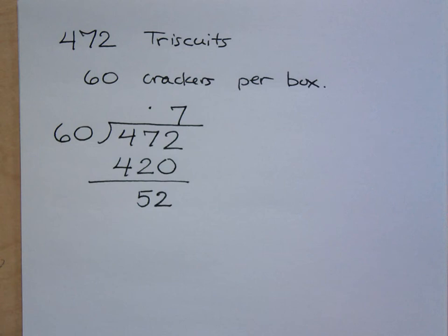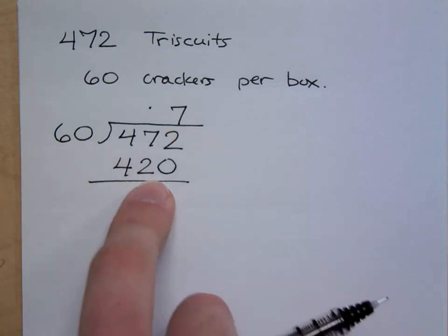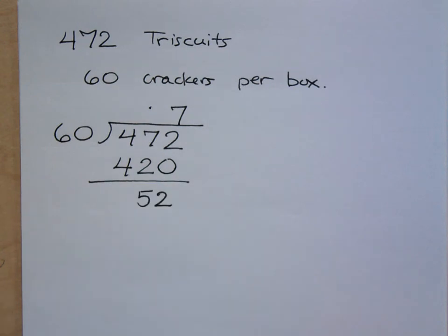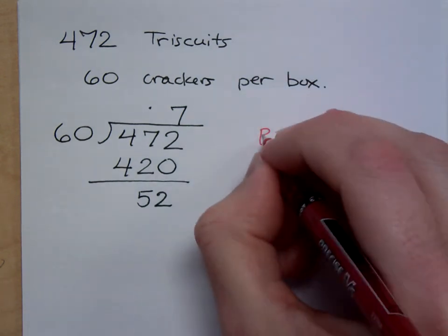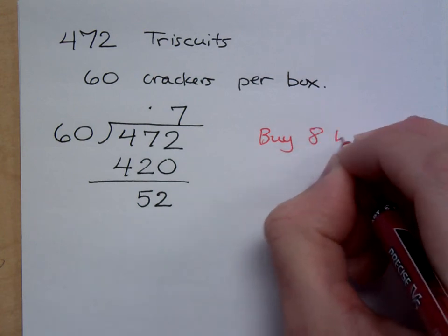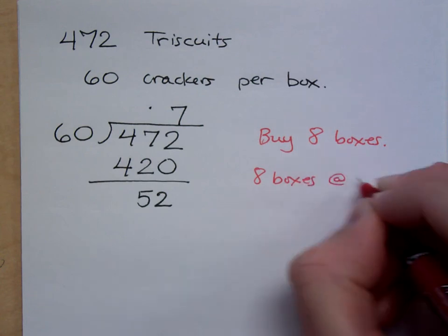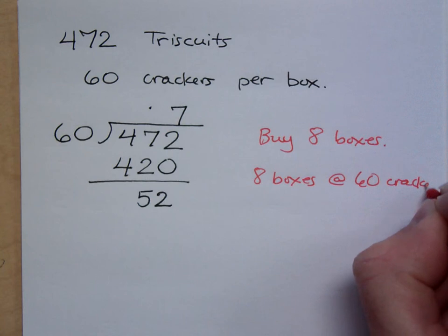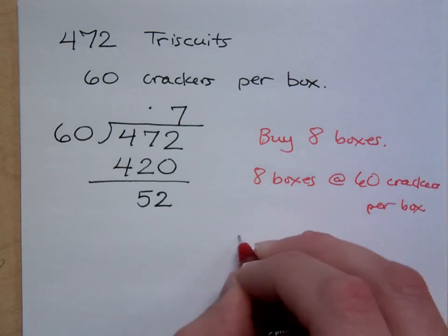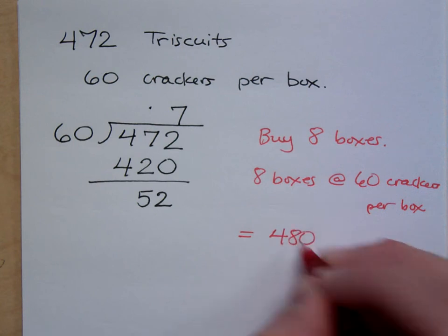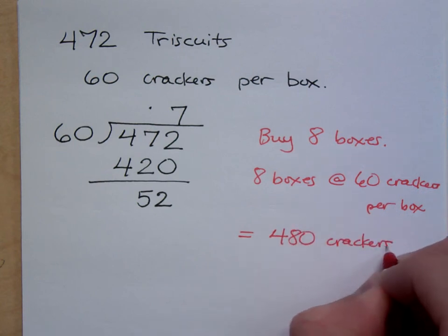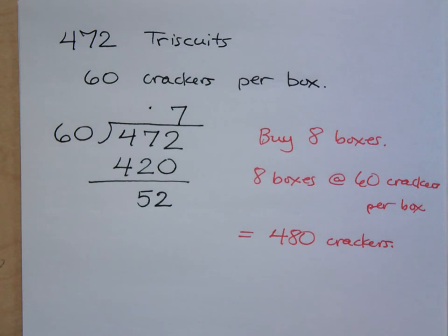So how many boxes of Triscuit should I buy? Hold on a second here. If I just buy 7 boxes, how many crackers will that be? How many is 7 times 60? 420. I still need to make up for the extra 52 crackers, right? Buy 8 and have that one. Yeah, that's what you do. So I need to buy 8 boxes. 8 boxes at 60 crackers per box will equal how many crackers? 480. So that means I'll have a few left over. Is that going to be okay?